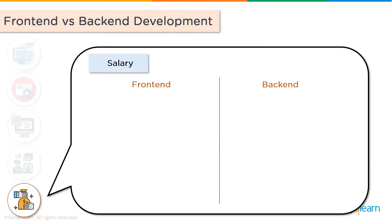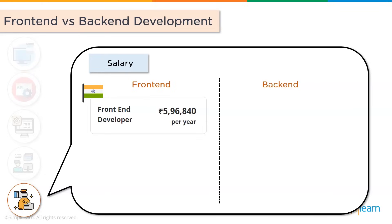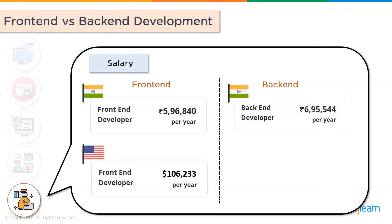And lastly, let's look at the salaries offered to these front end and back end developers. In India, the average salary of a front end developer is around 6 lakh rupees per annum, while a back end developer earns about 7 lakh rupees per annum. In the US, a front end developer earns around 100,000 US dollars per annum, while a back end developer earns about 121,000 US dollars per annum.